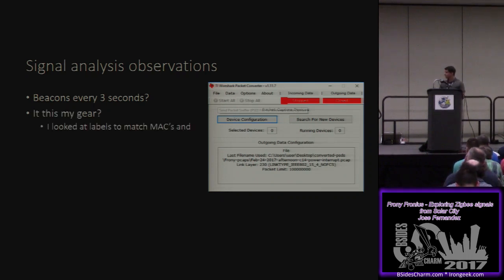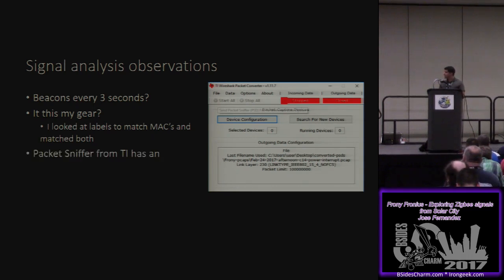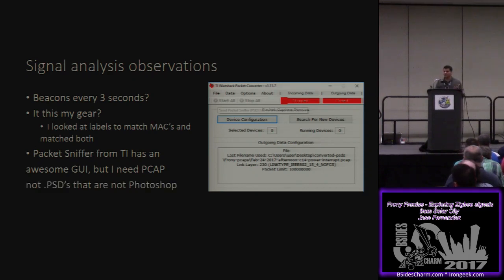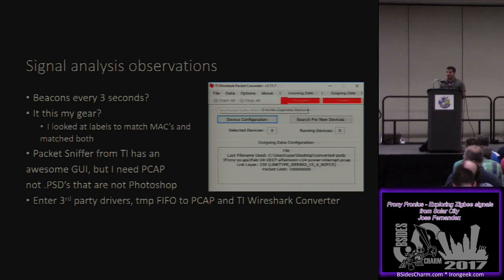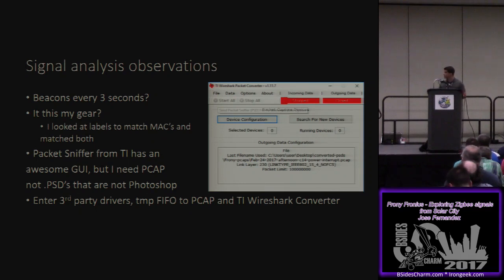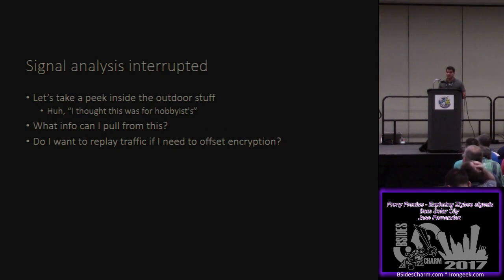I'm not going to show you the pcaps because it's too intense to be honest. Beginning every three seconds — odd number. Why three? Is this really my stuff? I compared the MAC addresses on both labels, matched both of them — yeah, it's my stuff. The packet sniffer from Texas Instruments has an awesome GUI, great eye candy, but I needed pcap. This thing outputs to a .psd file — not Photoshop, it stands for Packet Sniffer Data. They have a Wireshark converter so you can take those .psd files and convert them into pcap.